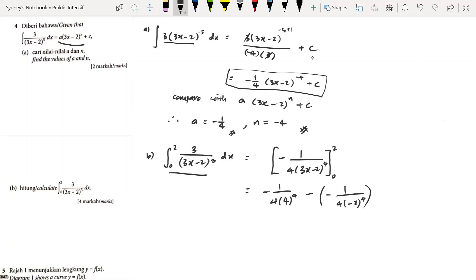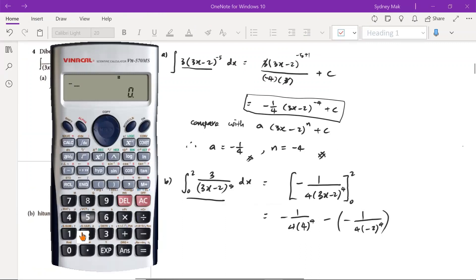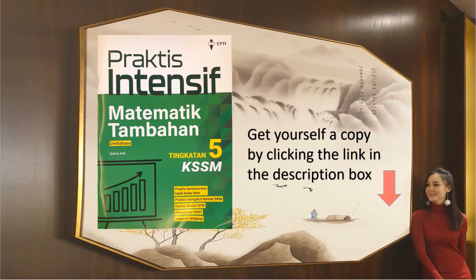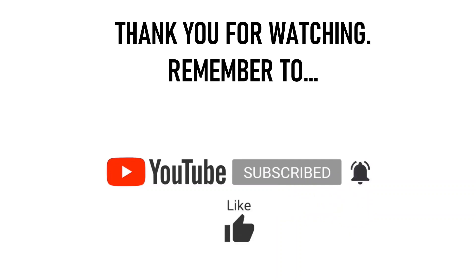Once we reach here, we need to use the calculator. Let's key in. We have negative 1 over 4 times 4 raised to the power of 5, and then minus a negative becomes plus, plus 1 over 4 times negative 2 raised to the power of 4. So we have 15 over 1024. We found the answer for question number 4: 15 over 1024. Thank you.